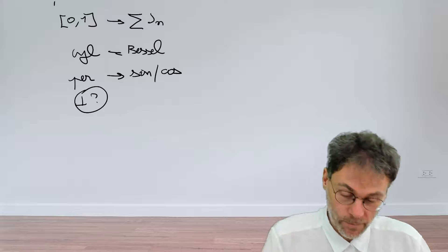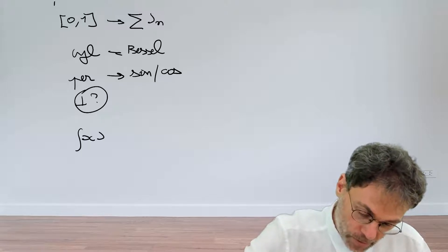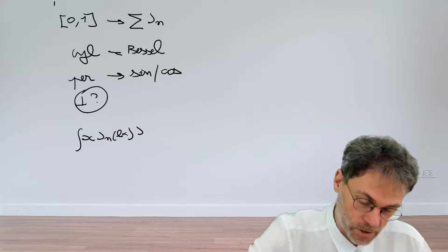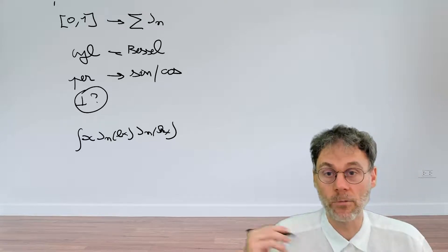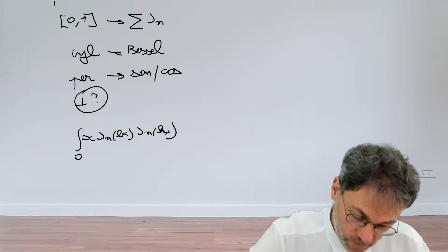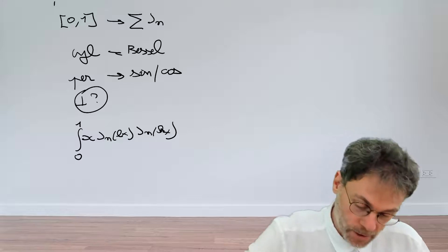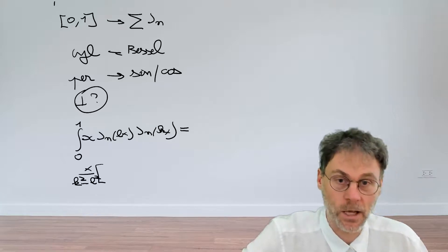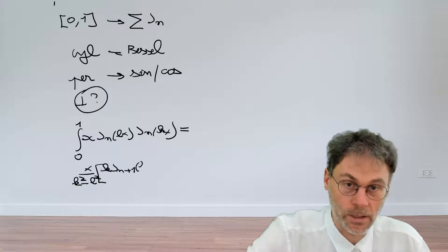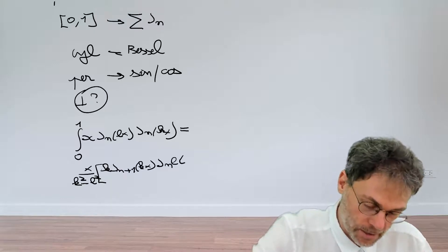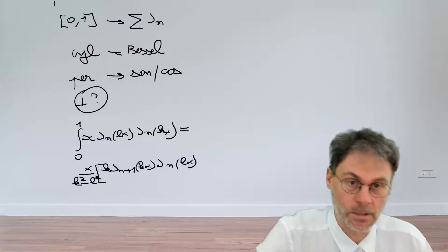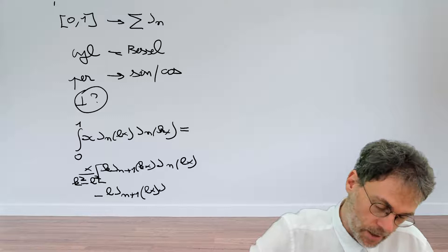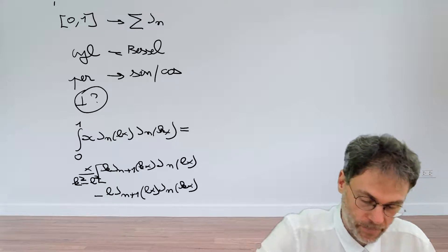This is where Lommel's integral comes into play, because Lommel's integral was an integral of a product of a weighting function x times J_n(lx) J_n(kx). In our case, because we're going to restrict ourselves to functions defined on the interval zero to one, we're going to integrate that between zero and one. And Lommel told us that this thing is equal to x divided by k squared minus l squared times [k J_{n+1}(kx) J_n(lx) - l J_n(lx) J_{n+1}(kx)].